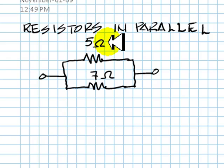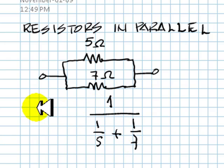We know, first we invert 5, then we invert 7, we add them together, and we find the inverse of the whole thing, and that is going to be the equivalent resistance.